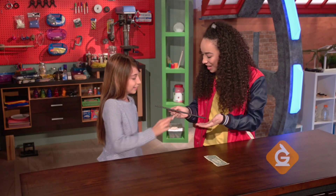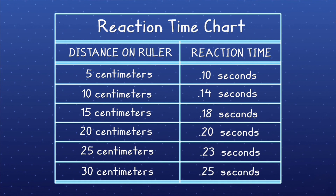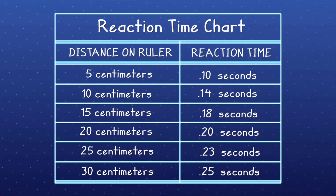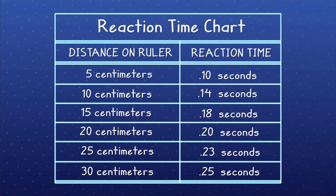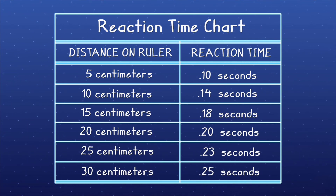That was 17 centimeters. You can measure the distance the ruler falls before you grab it and convert it to reaction time by using a table like this. Write down your results and compare it with your friends to see who has the fastest reaction time.